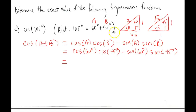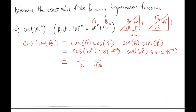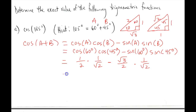Cosine of 60° is adjacent over hypotenuse, which is 1/2. Cosine of 45° is 1/√2. Sine of 60° is opposite over hypotenuse, which is √3/2. Sine of 45° is also 1/√2. So we get 1/2 times 1/√2 minus √3/2 times 1/√2, which simplifies to 1 minus √3, all over 2√2.